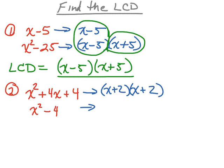Now I'm going to factor x squared minus 4. To factor this I'm going to use the difference of squares, like in that first example. The square root of x squared is x, the square root of 4 is 2. We have one factor with a minus 2 and another factor with a plus 2. So these are my factors of x squared minus 4, using the difference of squares.